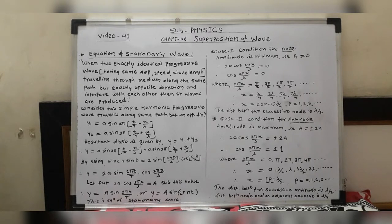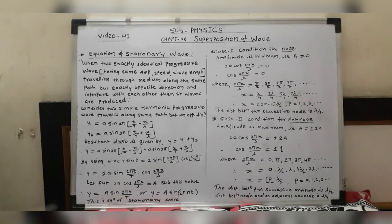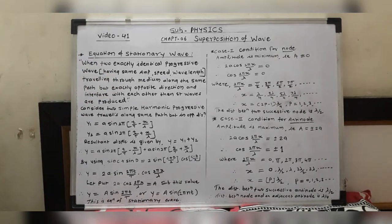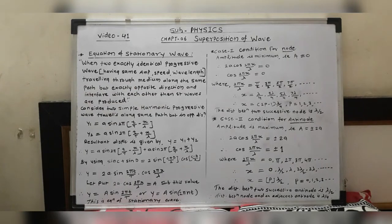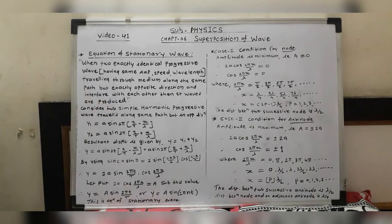We define stationary waves as follows: when two exactly identical progressive waves — that means two waves having the same amplitude, speed, and wavelength — travel through the medium along the same path but in exactly opposite directions and then interfere with each other, then stationary waves are produced.